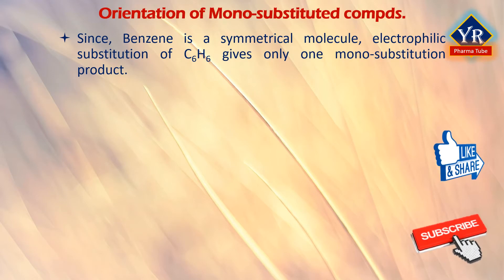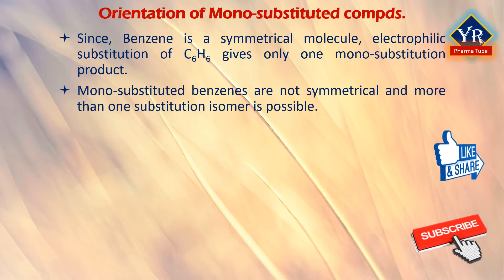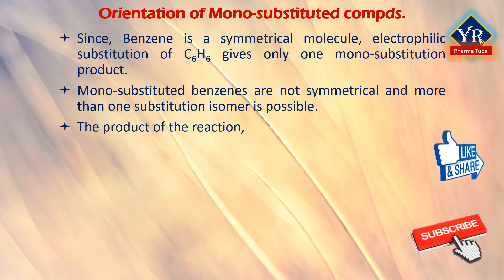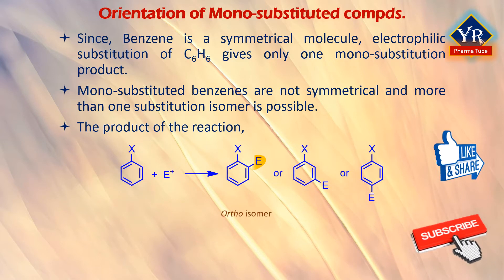Since benzene is a symmetrical molecule, electrophilic substitution of benzene gives only one monosubstitution product. Monosubstituted benzene derivatives are not symmetrical and more than one substitution isomer is usually possible. A question arises: when a substituted benzene undergoes an electrophilic aromatic substitution reaction, where does the new substituent attach itself? In other words, is the product of the reaction the ortho-isomer, the meta-isomer, or the para-isomer?